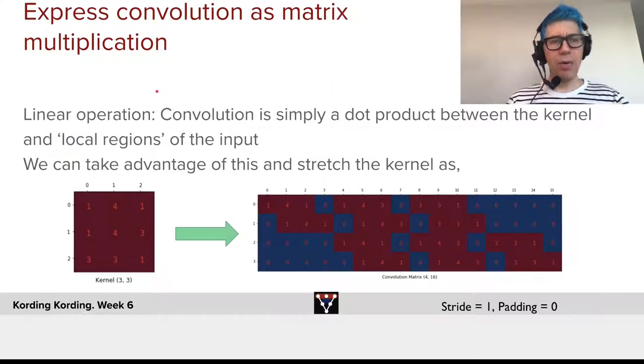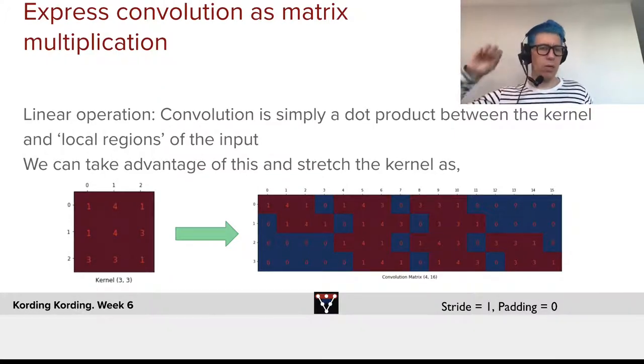Now importantly, we can also generally express convolution as a matrix, where we could say we take the input, we convert it into a vector, and then convolution is just a multiplication there. Convolution is simply a dot product between the kernel and local regions of the input, and we can therefore produce a stretched kernel.